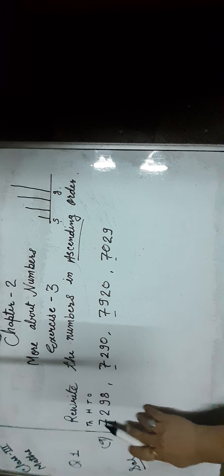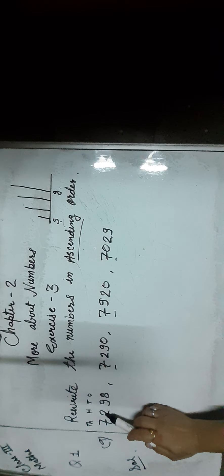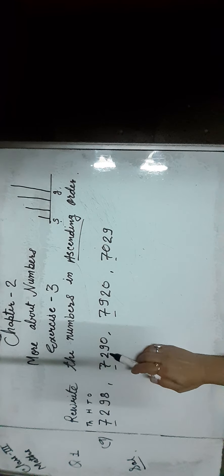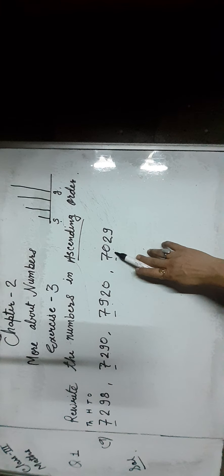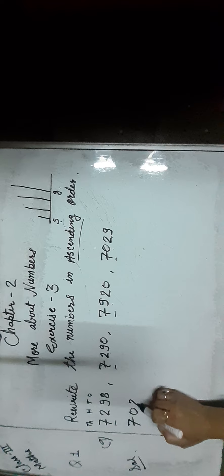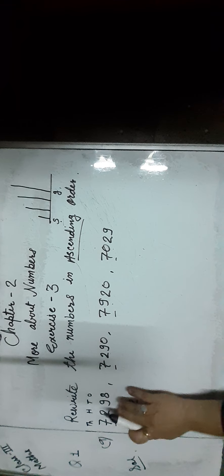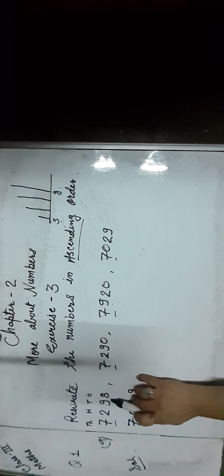So we have to move to the 100s place digit. The 100s place digits are 2, 9, and 0. As you know, 0 is the smallest.